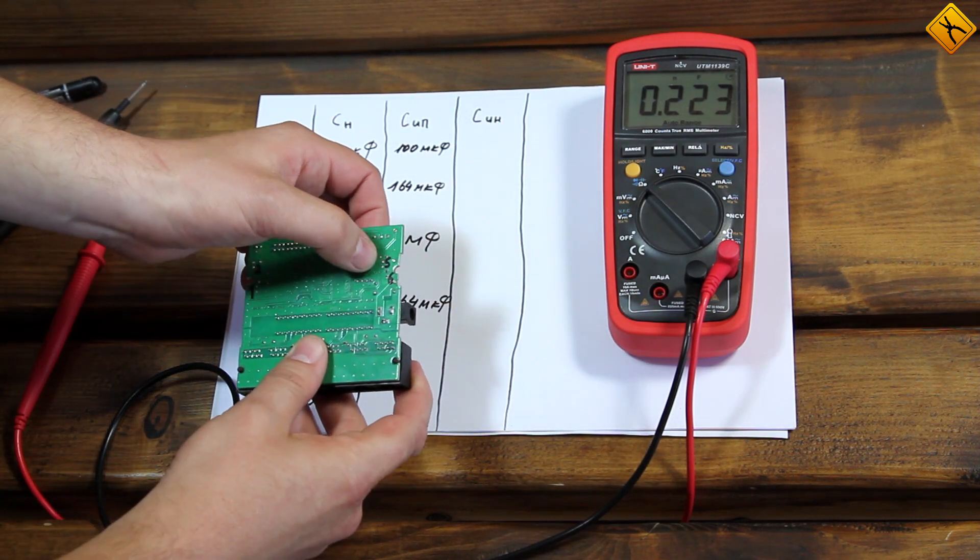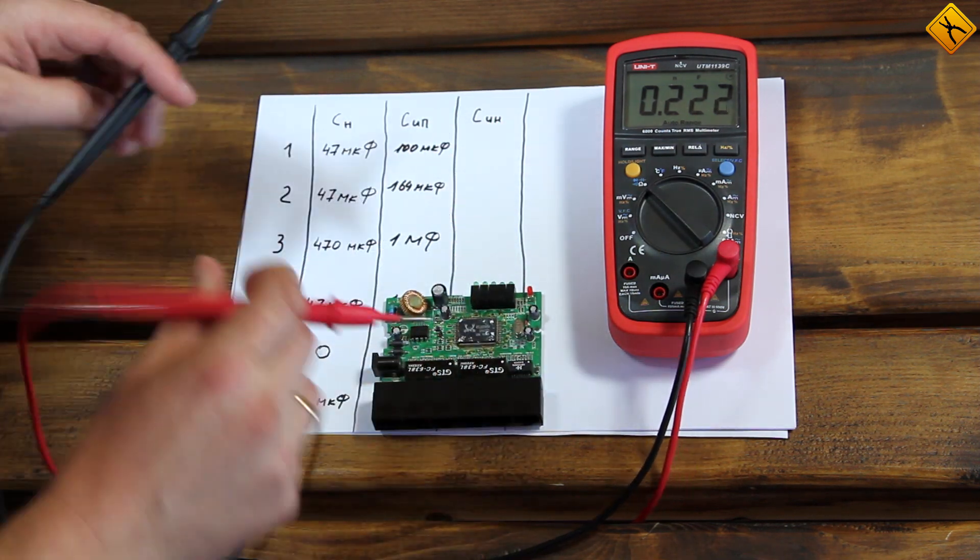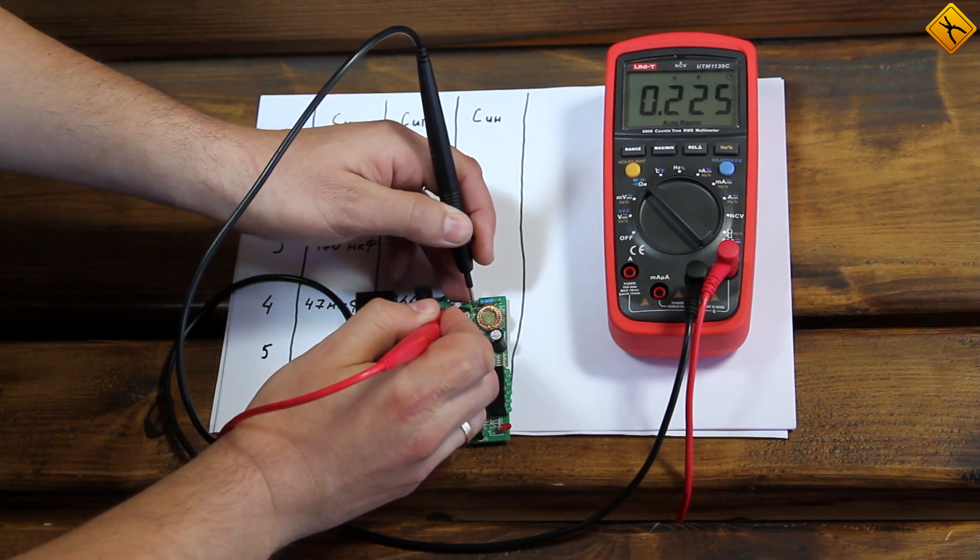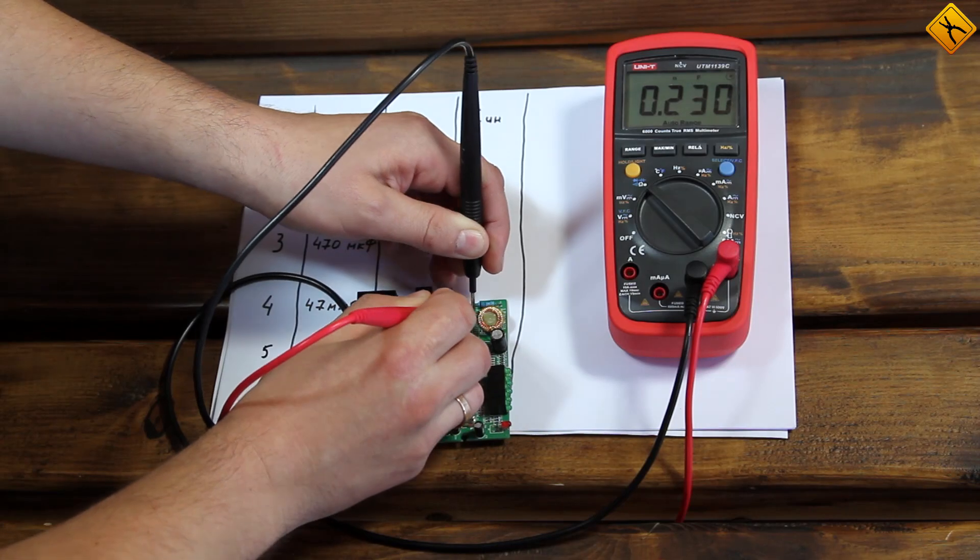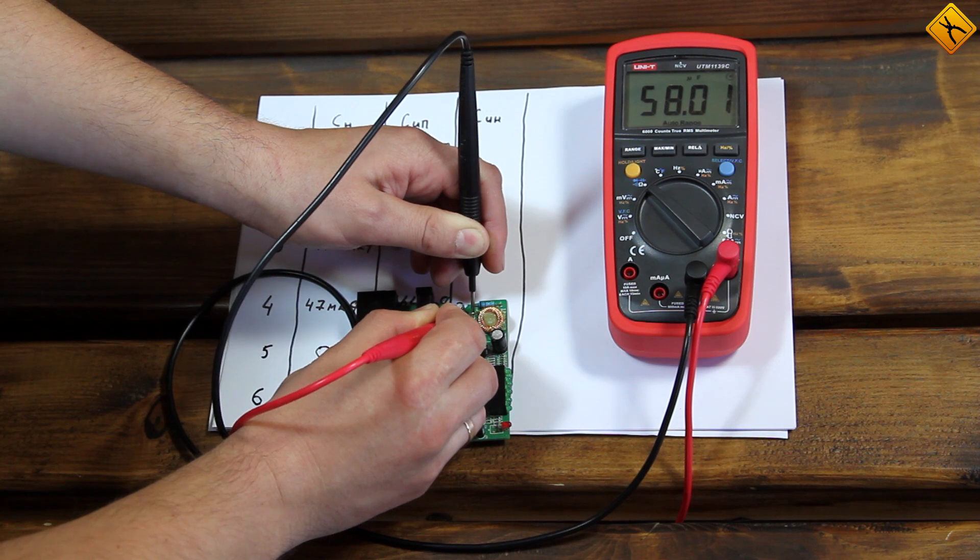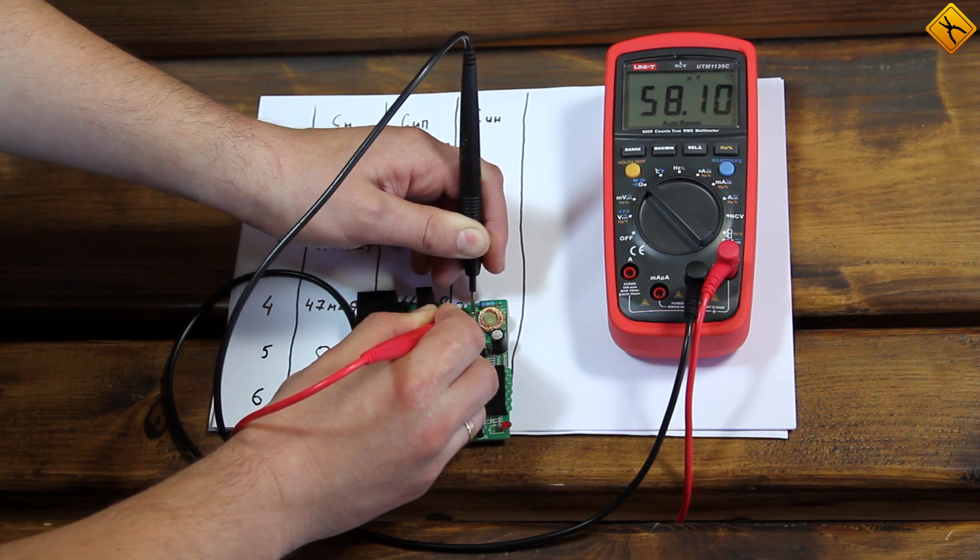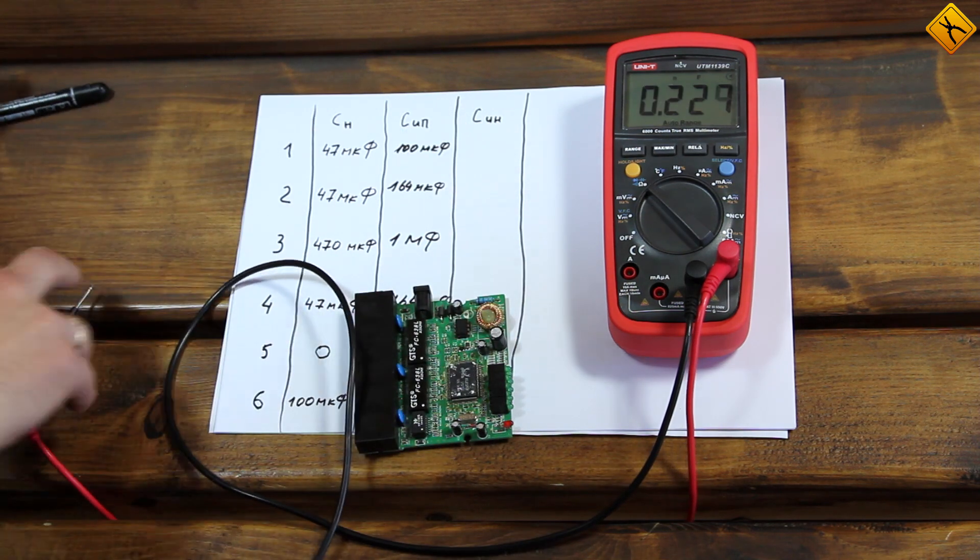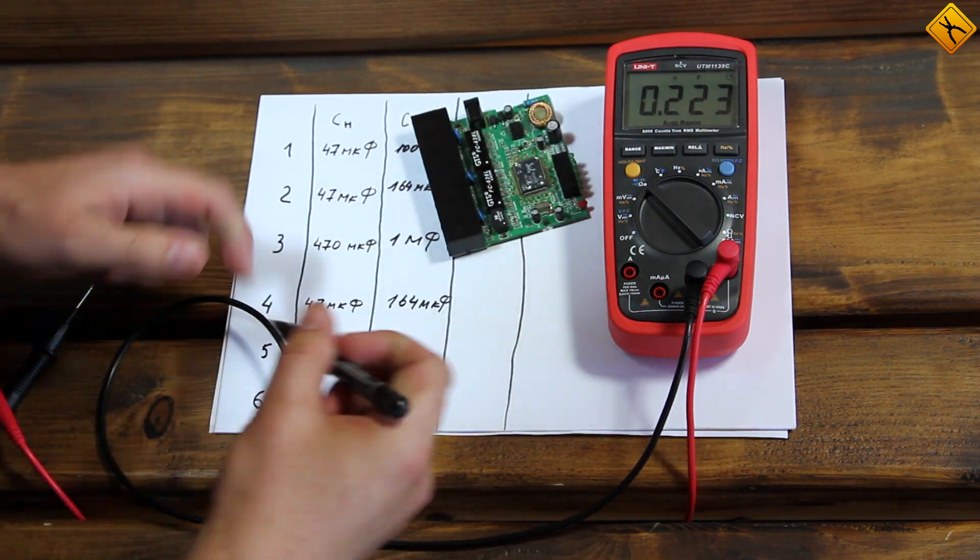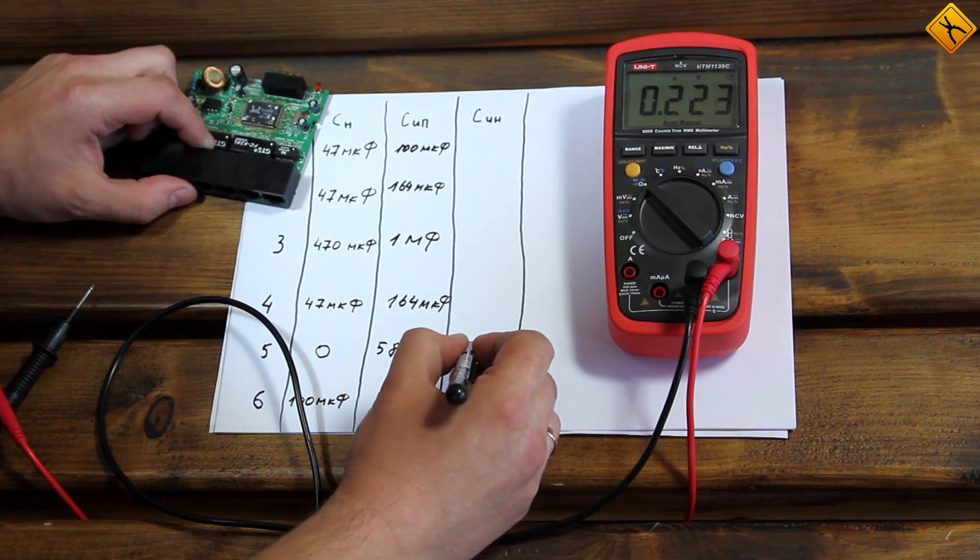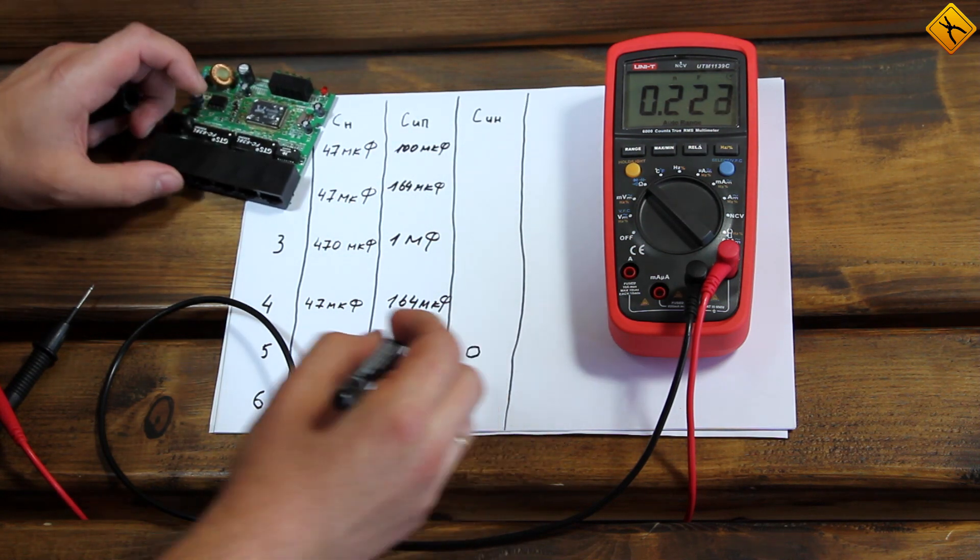In point five right here, there's no capacitor. But for the accuracy of the experiment, let's measure it as well. What can I say? It looks like we have an invisible capacitor on the PCB with a capacitance of 58 microfarads. We should patent this technology. I will also record zero in this slot, as there is no capacitor here.